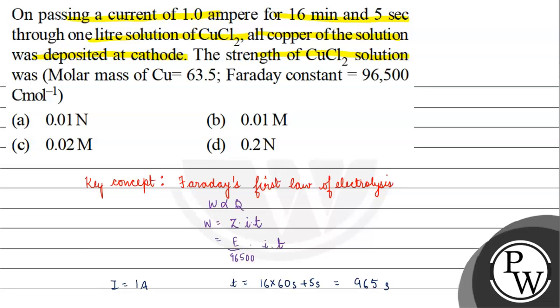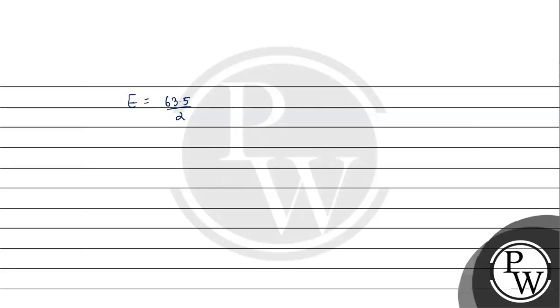And we asked for strength. Equivalent weight, what will it be? 63.5 by 2, which is 31.75.